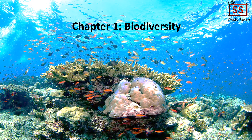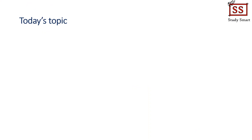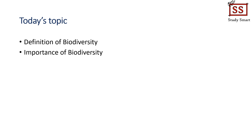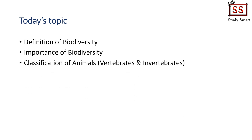Hi students, welcome to Study Smart channel. I am Cegu Jennifer here and today we are going to study chapter 1 of Form 2 Science: Biodiversity. I will be sharing some Study Smart tips so make sure you watch this video until the end. Before we start the class, let's see what are the topics we are going to cover. We are going to study the definition of biodiversity, its importance, and the classifications of animals and plants.